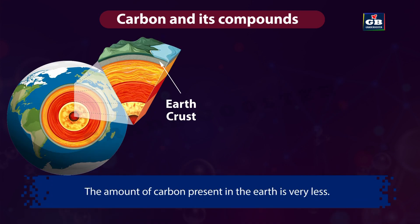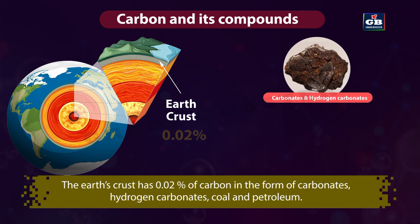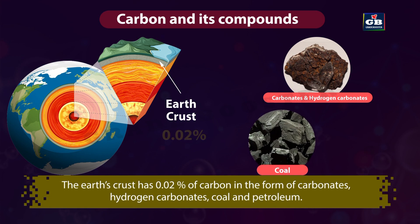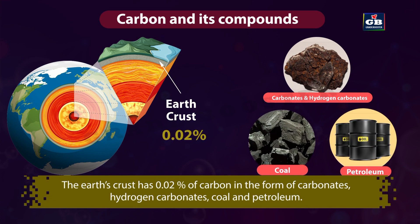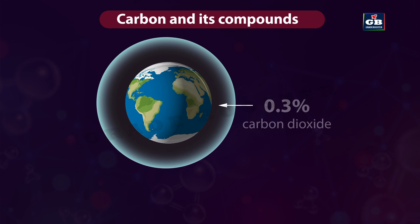The amount of carbon present on Earth is very less. The earth's crust has 0.02% of carbon in the form of carbonates, hydrogen carbonates, coal, and petroleum. The atmosphere has 0.3% of carbon dioxide.